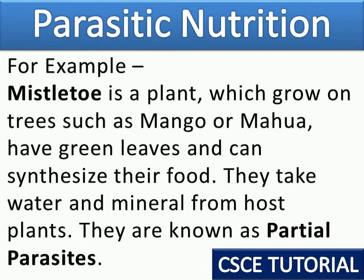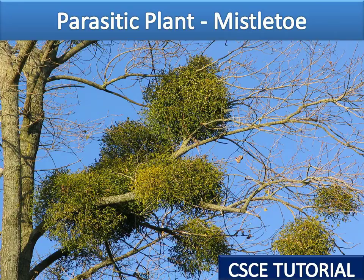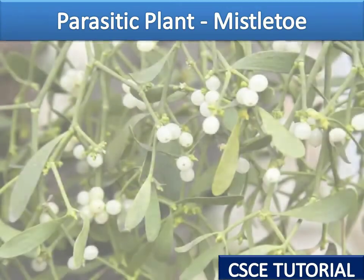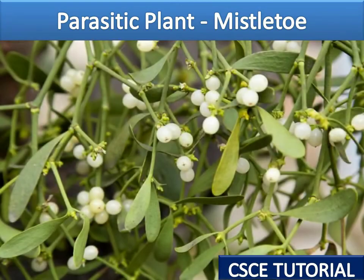Mistletoe grows on mango trees or other trees. It has green leaves and obtains only water and minerals from the host. Because it can prepare some of its own food, it is also called a partial parasite.